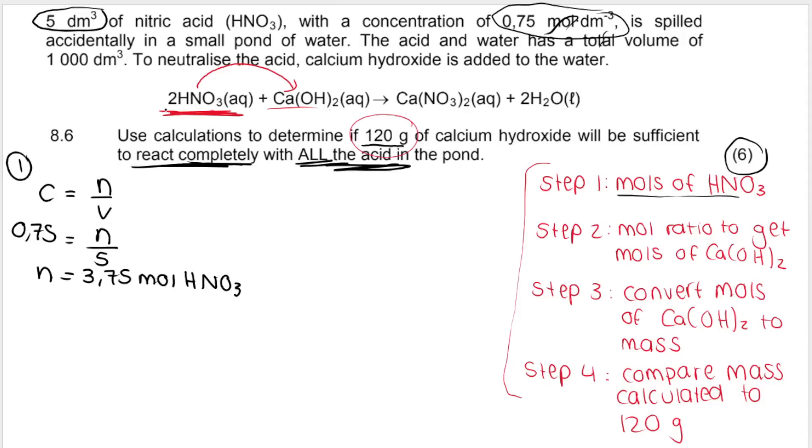We can calculate the moles of HNO3 using the original volume and the original concentration or we can calculate it using the new volume and the new concentration. Remember, moles stays the same after I spill the acid, so it doesn't matter. So I'm just going to use the original 0.75 moles and 5 and remember we get my moles as being 3.75 moles and that is of HNO3. That's step one. Then to get from moles of HNO3 to moles of calcium hydroxide to get from one thing in my balanced chemical equation to another, I have to use a mole ratio.